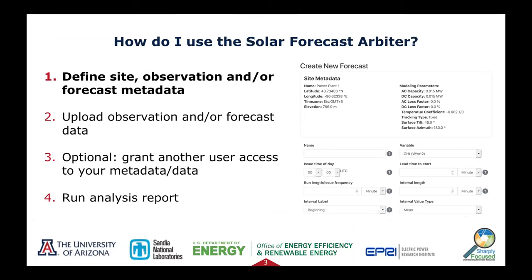The first step is to define the site observation and forecast metadata. Evaluation scenarios are largely defined by these metadata definitions, so they're important to get right in the beginning. Sites must be defined before observations and forecasts are associated with them. The site metadata includes fields such as latitude and longitude. It can also include standardized high-level metadata to describe a PV power plant such as DC capacity, AC capacity, the tracking or fixed parameters of the system, and module temperature coefficients.